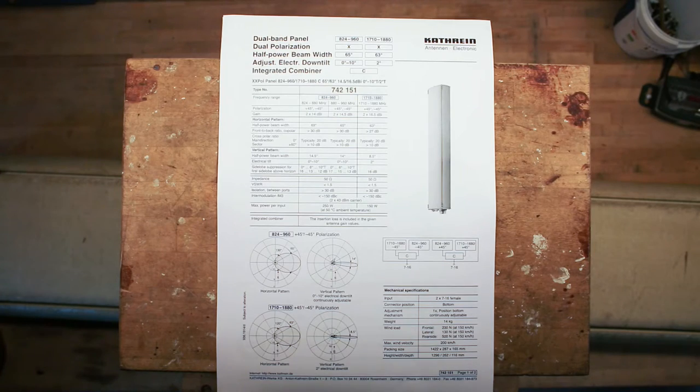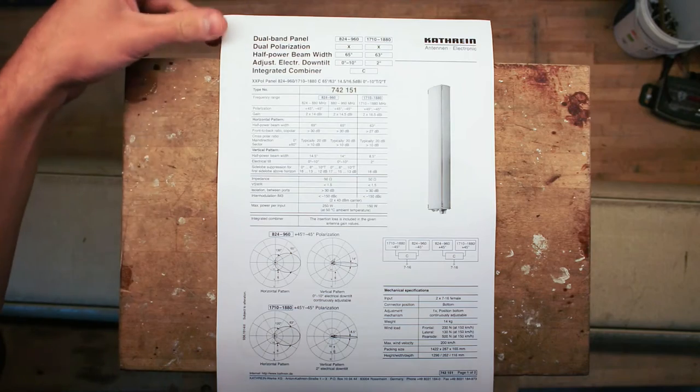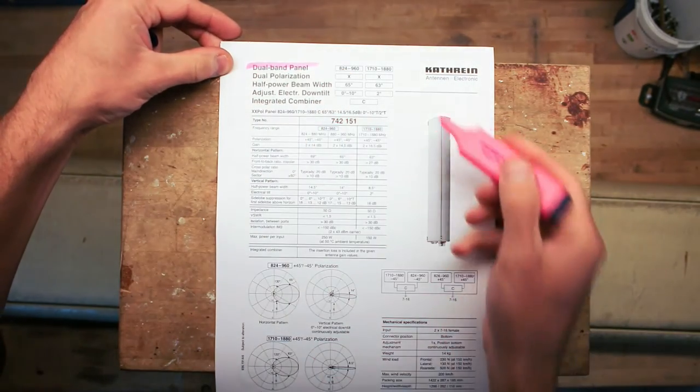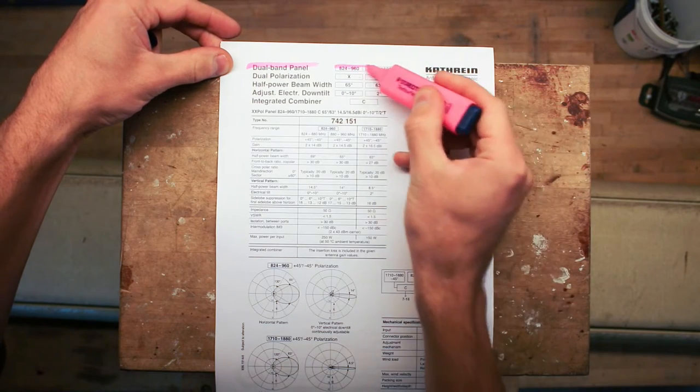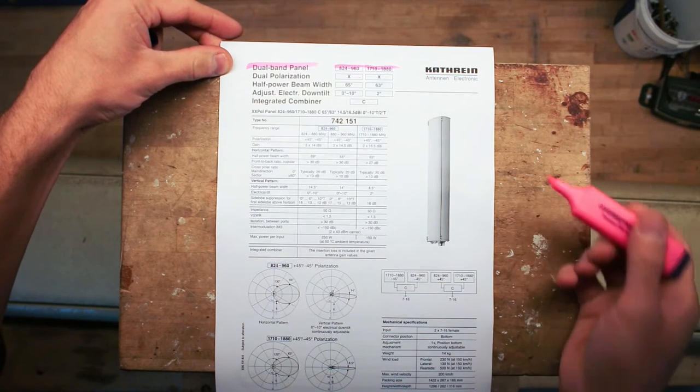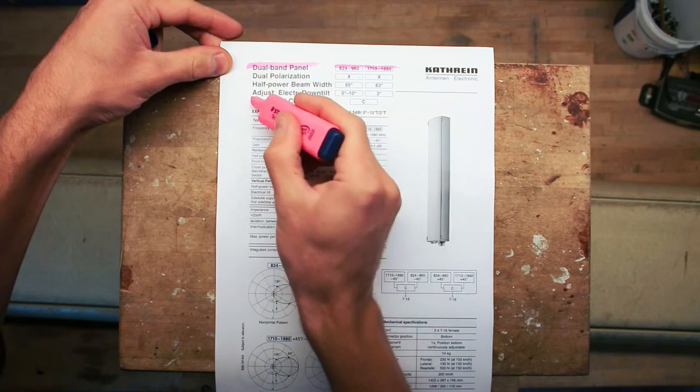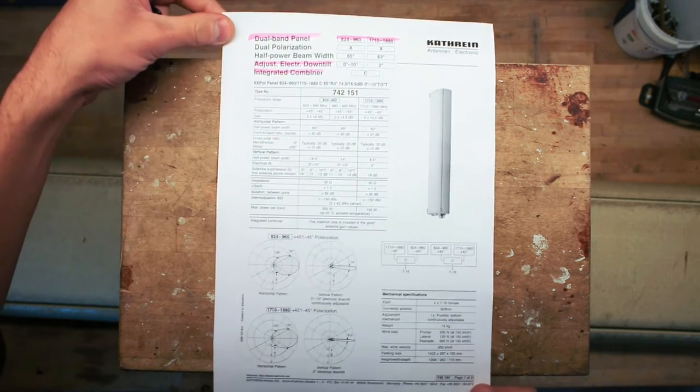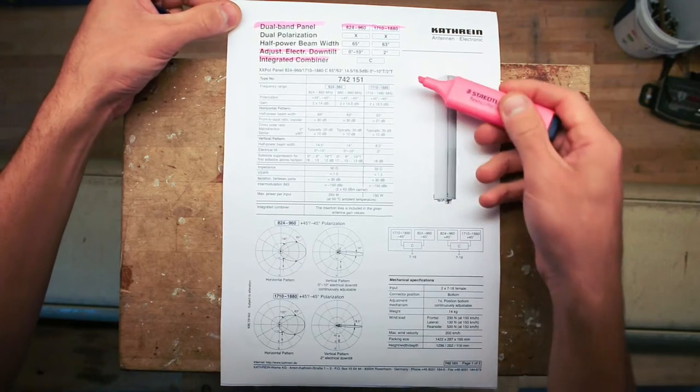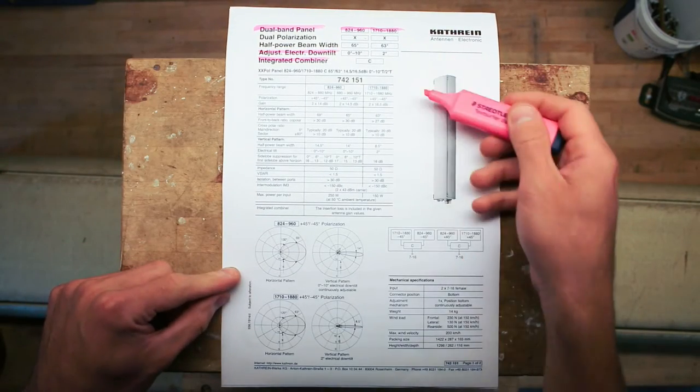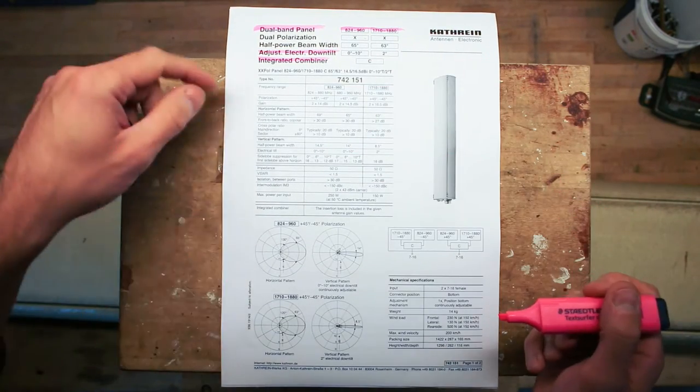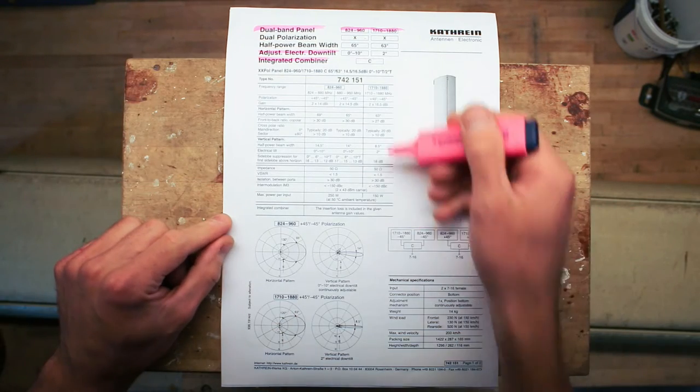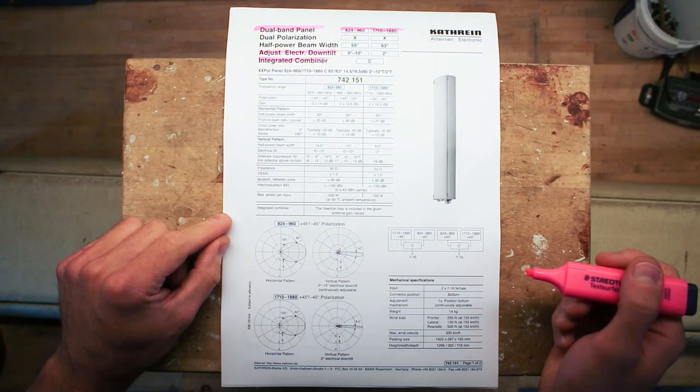But we will see once inside that this actuates the phase shifter. The data sheet tells us everything we really want to know. We can see here it is a dual band panel, means it can operate at the 900 and 1800 megahertz range, has an integrated combiner, has adjustable electrical down tilt, and if we look further down here we can see all the different vertical horizontal patterns and the max power output and all the dampenings and amplification factors.